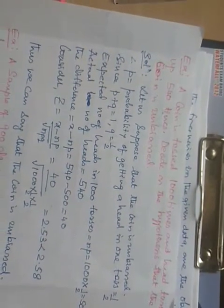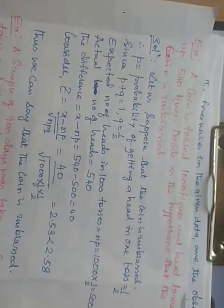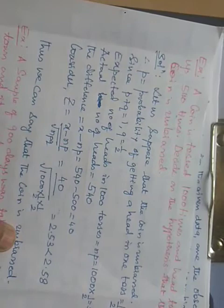A coin is tossed 1000 times and heads turns up 540 times. Test the hypothesis that the coin is unbiased. The formula is already given here. I have substituted the values from the given data, and the value will be 2.53. Therefore, it is less than 2.58. Thus, we can say that the coin is unbiased.